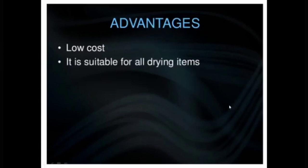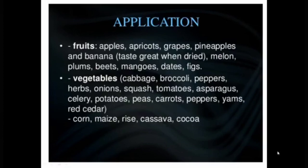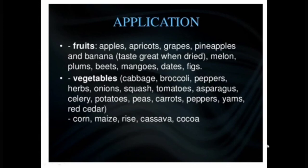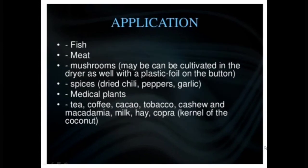The advantage of natural convection solar dryers is low cost, as they depend on nature with no need for heavy investment. They are suitable for drying almost all items. Applications include drying fruits such as apples, apricots, grapes, pineapples, and bananas; vegetables such as potatoes, peas, carrots, and peppers; grains such as corn, maize, and rice; as well as fish, meat, mushrooms, tea, and coffee.